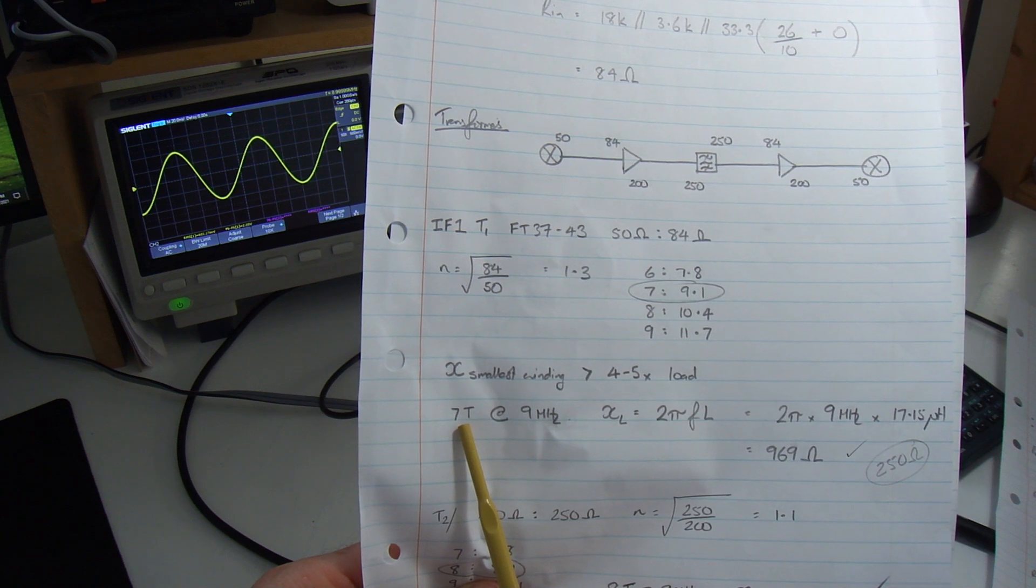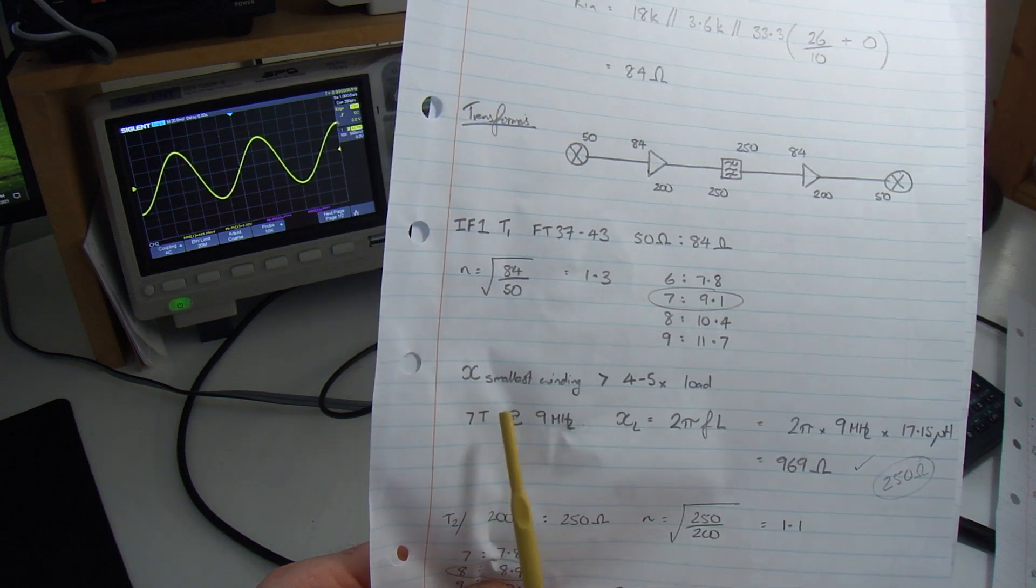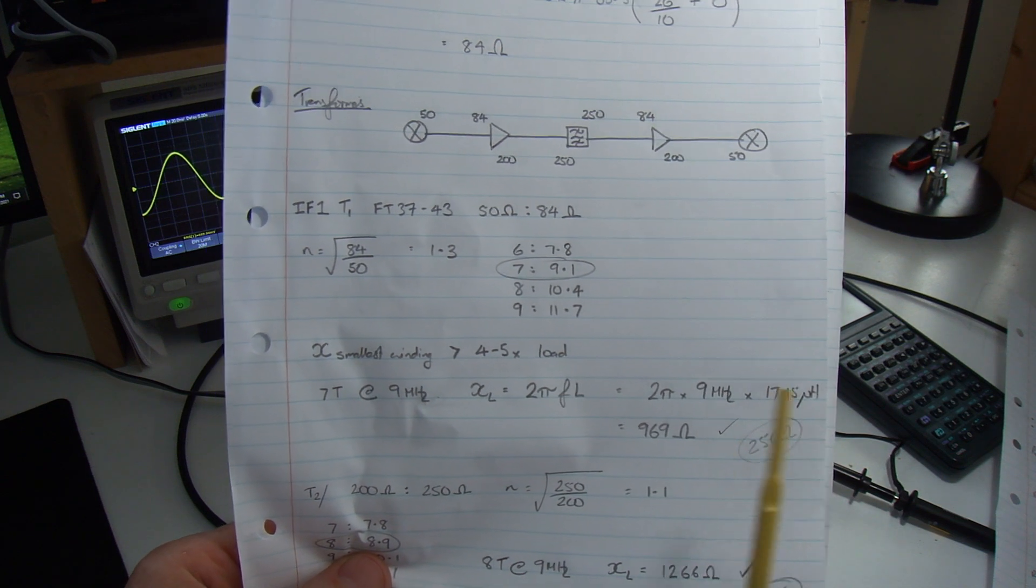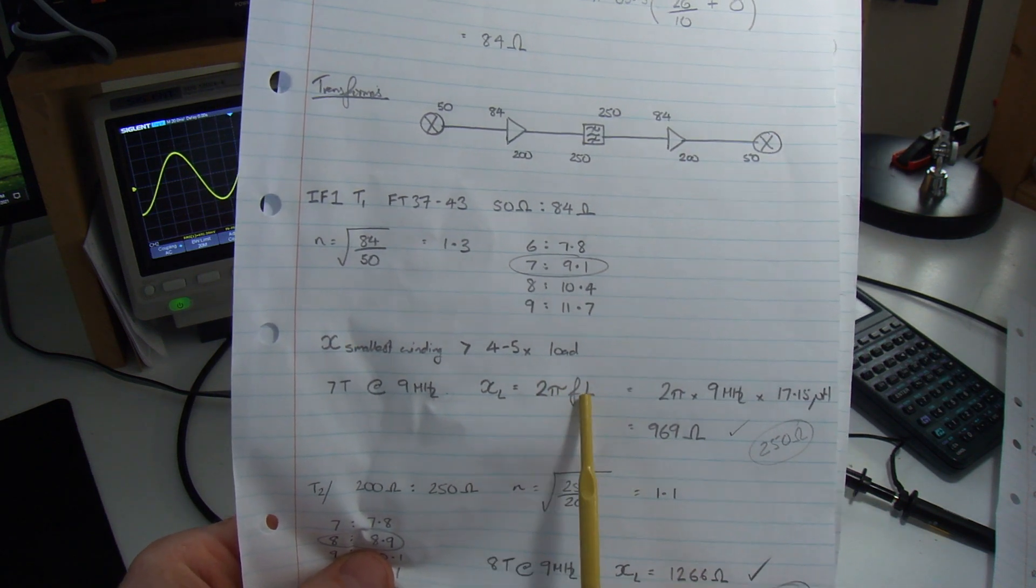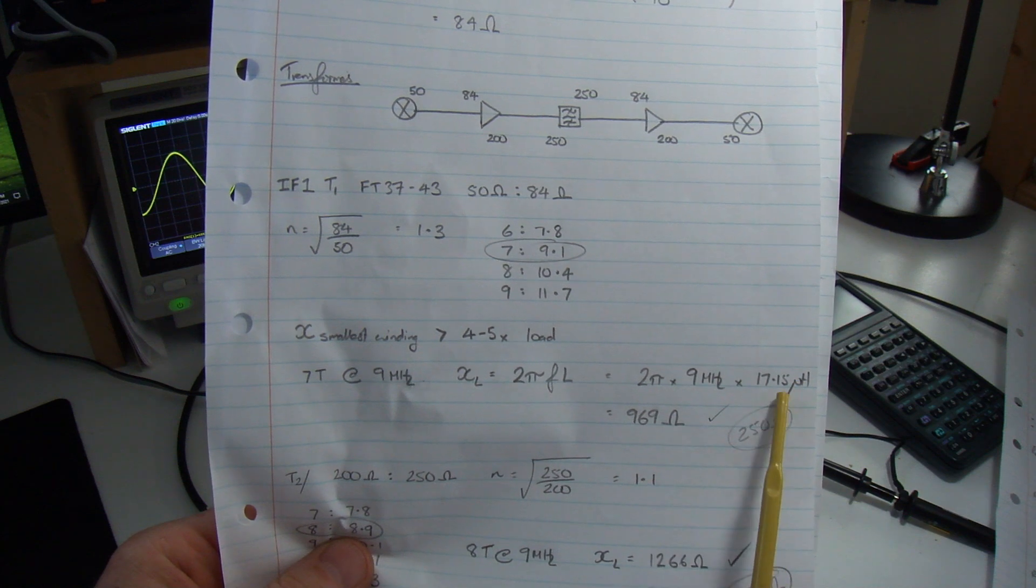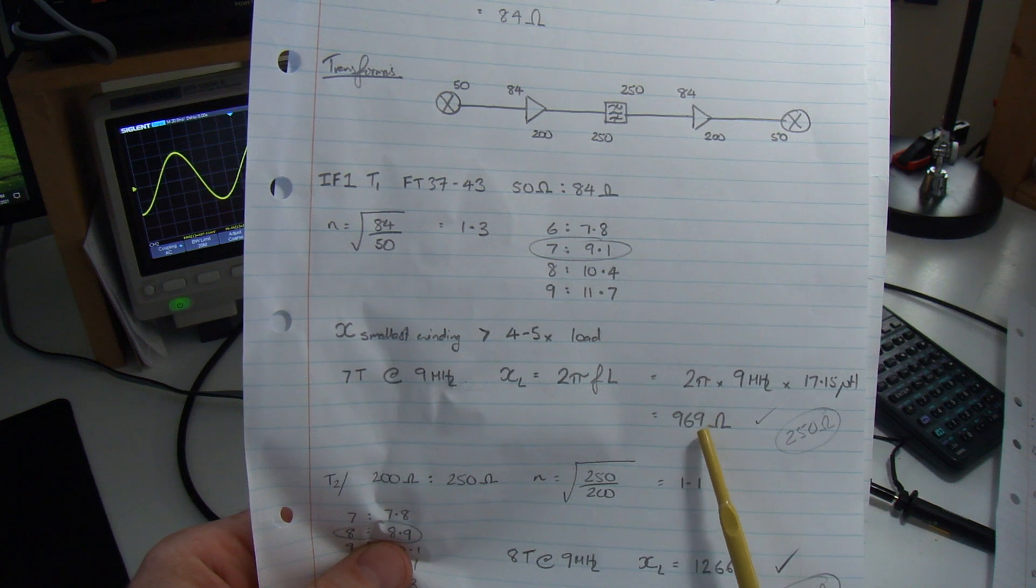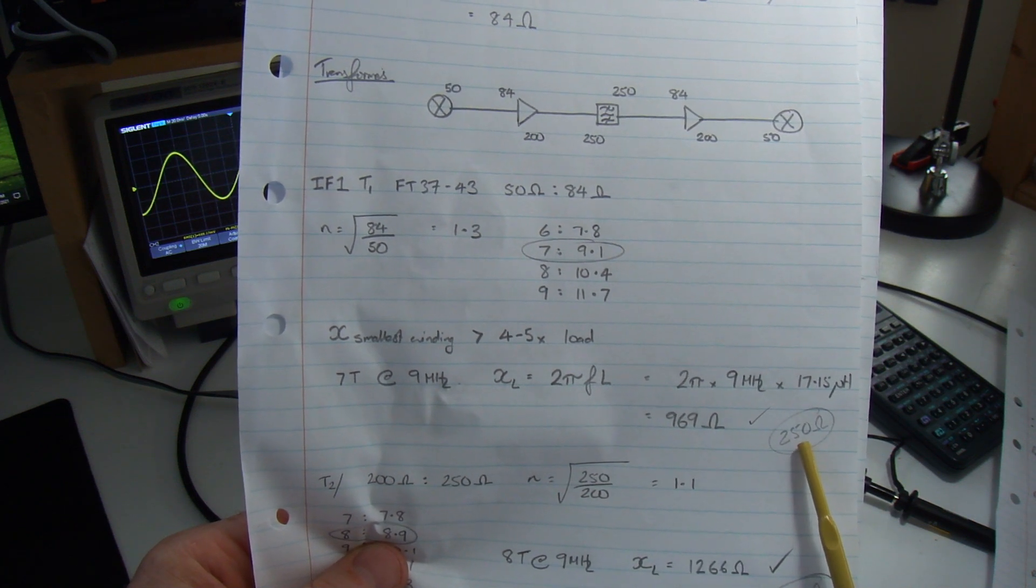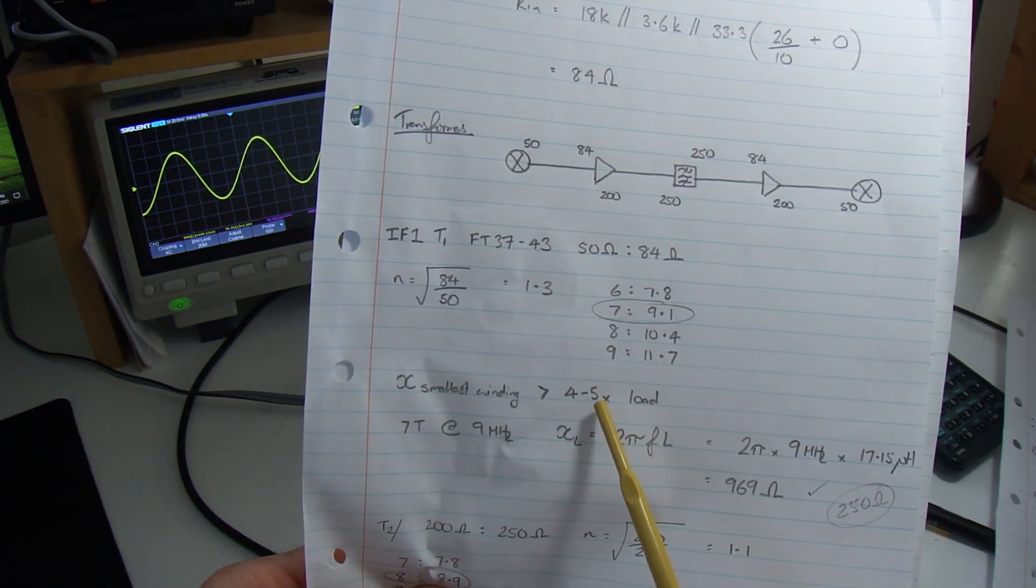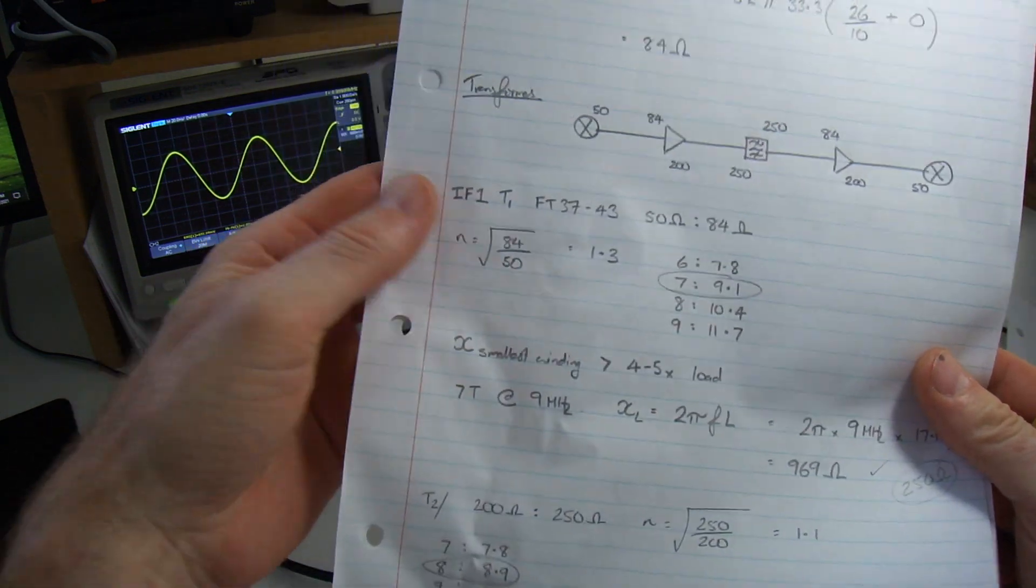The other thing that comes out of solid state design for the radio amateur is for the smallest winding we need to make sure that its inductive reactance is greater than 4 to 5 times the load hanging off it. So I'm going to use a transformer which is 7 turns to 9 turns. 7 turns on an FT37-43 comes out at 17.15 microhenries. XL equals 2 pi FL. At 9 megahertz, 2 times pi times 9 megahertz times that inductance comes out at 969. I needed to make sure I was greater than 250 ohms. Big tick, I'm good. So that's T1.